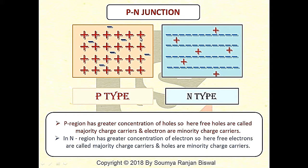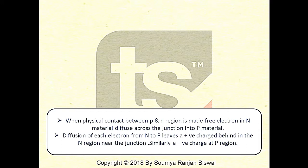For a signal diode, we take two types of semiconductor — one is P-type and another is N-type. In P-type semiconductor there is a greater concentration of holes; holes are called the majority charge carrier and electrons are called the minority charge carrier. In the N-region there is a greater concentration of electrons, so electrons are the majority charge carrier and holes are the minority charge carrier. To form a diode, physical contact between the P and N-type regions is made.